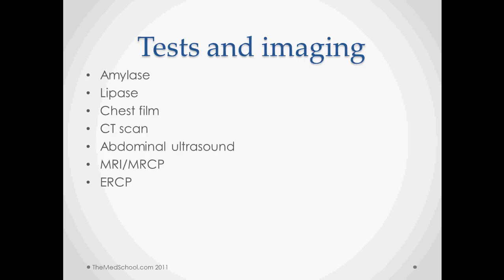If we are suspicious of pancreatitis, amylase and lipase tests are the two big tests to order. Other pancreatic enzymes may be helpful, and acute-phase proteins like C-reactive protein may help contribute to the diagnosis, but amylase and lipase are the primary ones. Some findings might show up on chest film, which may also be done to rule out other causes.